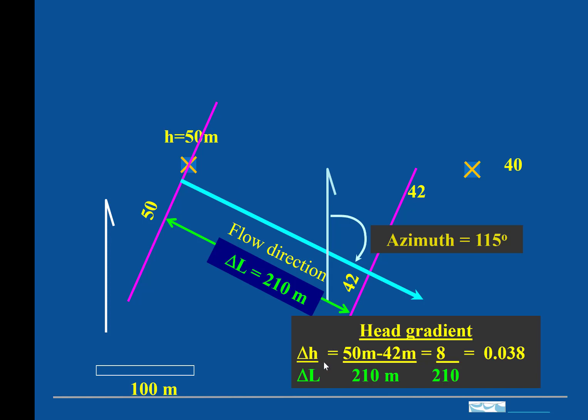So the head gradient magnitude is 50 minus 42 divided by 210. And that gives us a head gradient of 0.038.